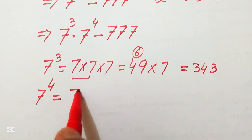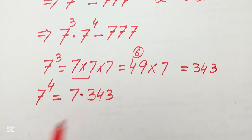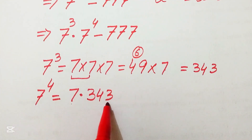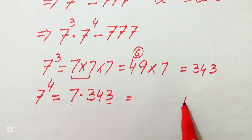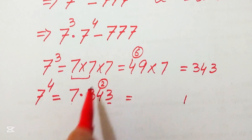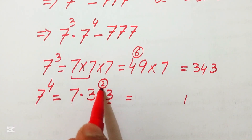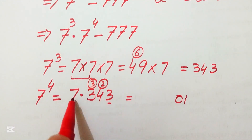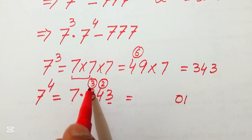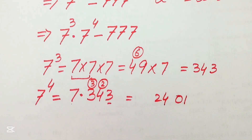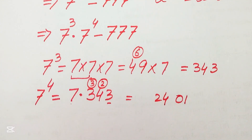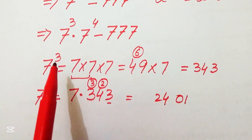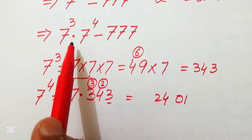Now we find 7 to the power of 4 by multiplying 7 × 343. Seven threes are 21, write 1 carry 2; seven fours are 28, plus 2 is 30, write 0 carry 3; seven threes are 21, plus 3 is 24. So 7⁴ = 2401.